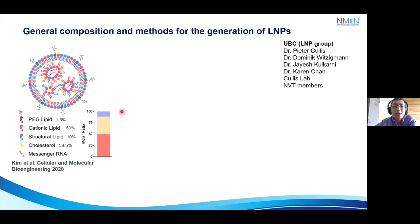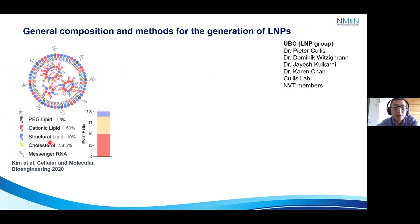The general composition of the LNP is that it contains cationic lipids at 50% with a pKa of 6.5. So when at low pH, it's positively charged and can bind to messenger RNA or siRNA. Cholesterol is responsible for the fluidity of the membranes. The structural lipids account for 10%, which is important for encapsulation of nucleic acids. And finally, PEG lipid accounts for 1.5%, which is responsible for controlling the size.